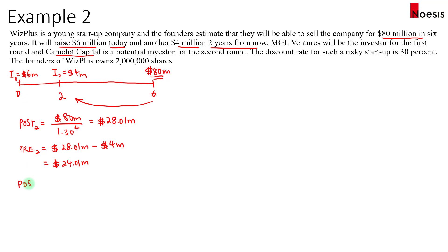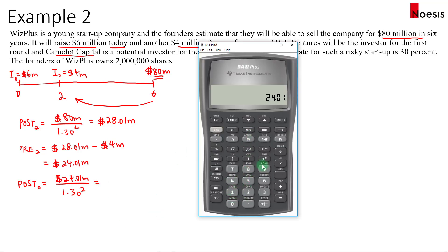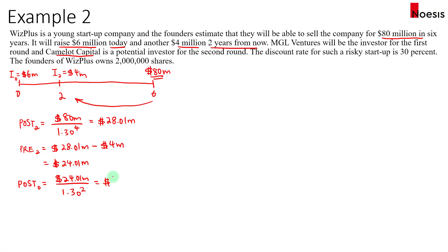To find the post-money valuation at time zero, we discount twenty-four point zero one million from year two back to year zero — that's two years. Setting FV to twenty-four point zero one, IY to thirty percent, N to two, and PMT to zero, we compute PV to get fourteen point two zero seven million. The pre-money valuation at time zero is fourteen point two zero seven million minus the six million investment, giving eight point two zero seven million.